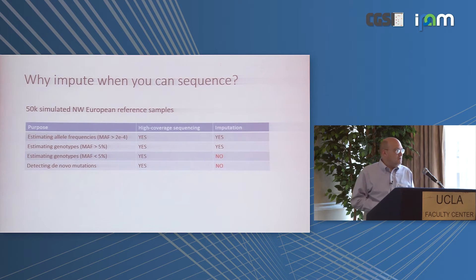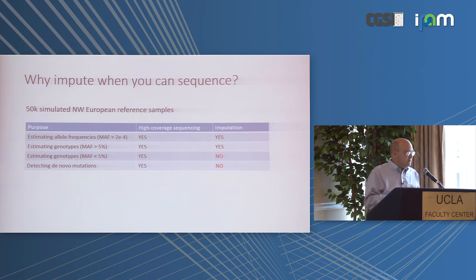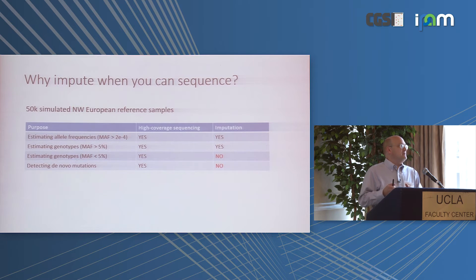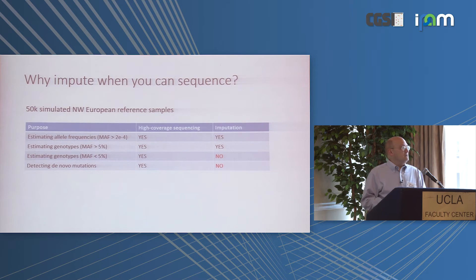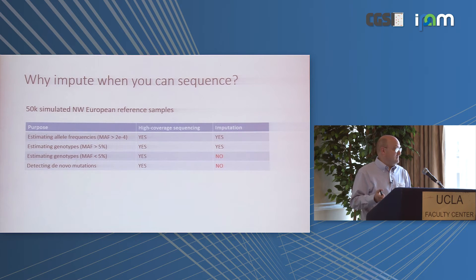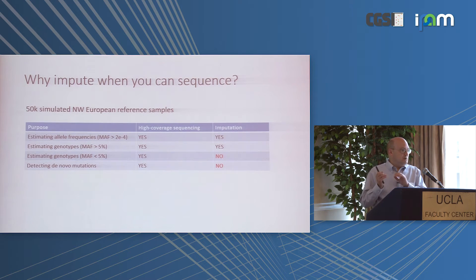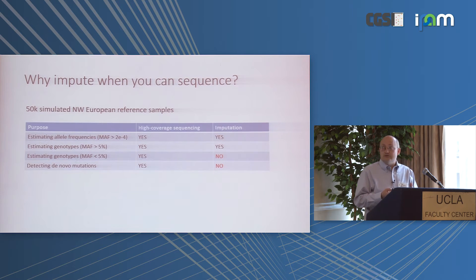A natural question from a sequencing background is: why impute when you can sequence? Imputation has error; high-coverage sequencing is more accurate. This slide breaks down what imputation is competitive with versus not. The easiest is estimating allele frequencies, which is what we do in association testing. With 50,000 Northwest European reference samples and imputing down to 20 copies, that's imputing down to a minor allele frequency of roughly 2×10⁻⁴ — and you can do very well.